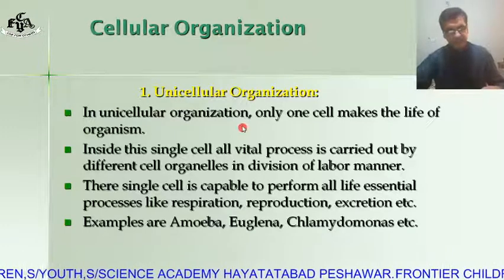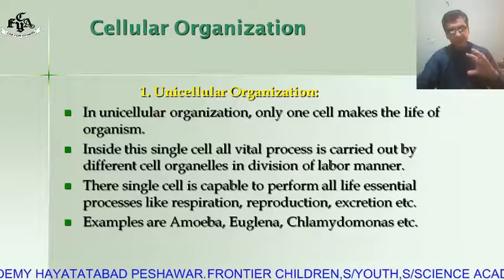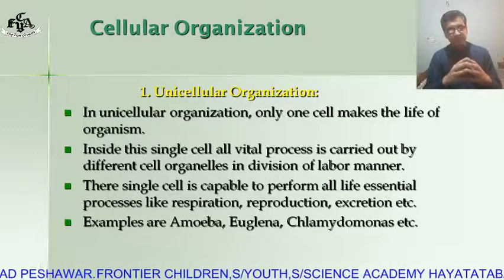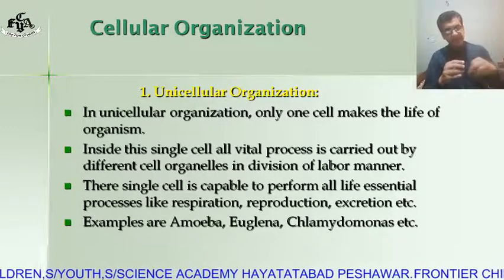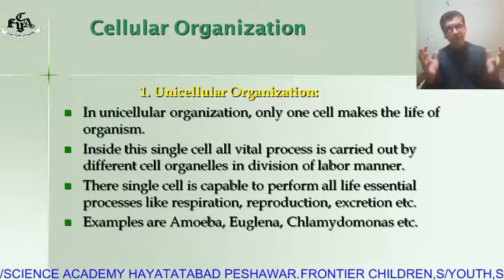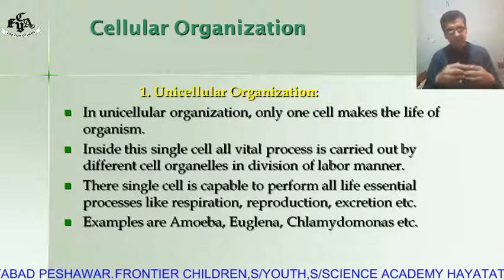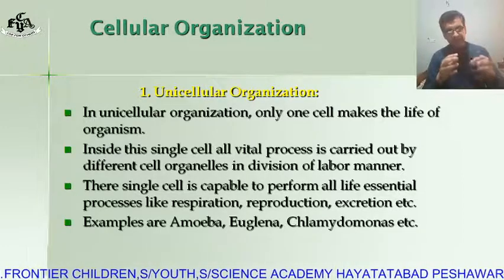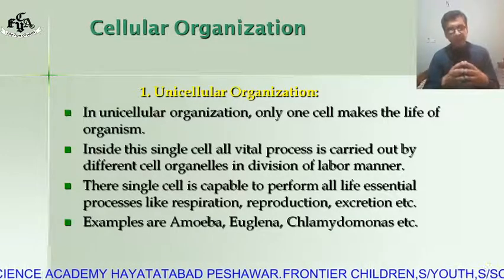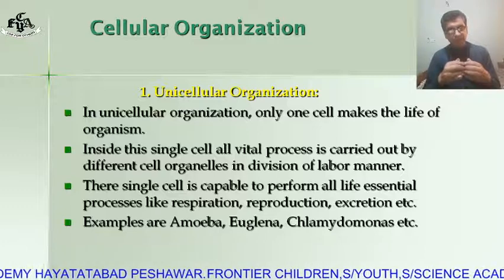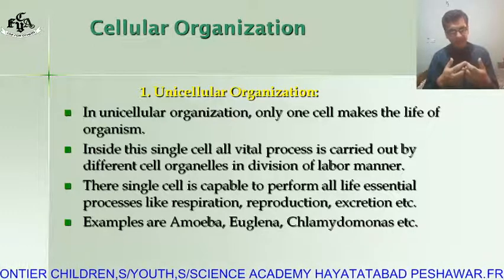First, unicellular organization: in unicellular organization, the body is composed of only one cell. Inside this single cell, all vital processes are carried out by different cell organelles. This is called division of labor — each cell organelle is assigned a different function and they coordinate with each other.